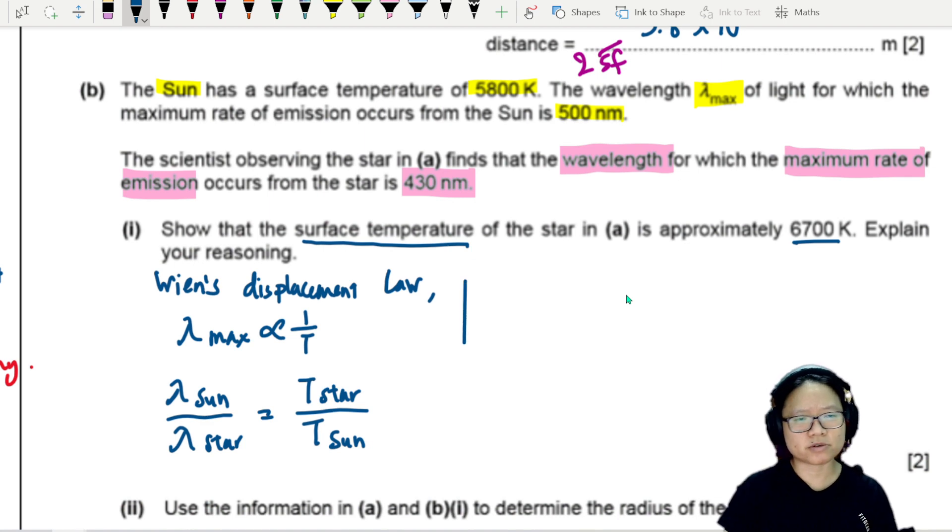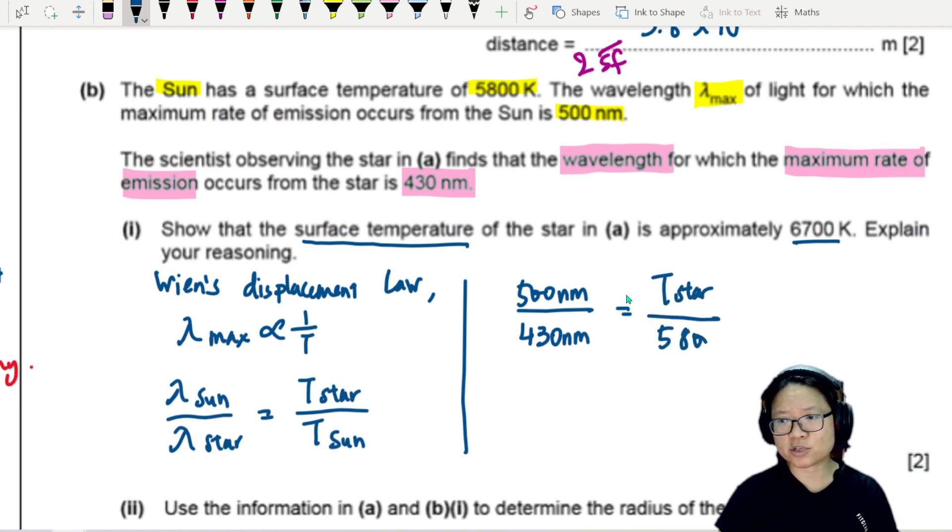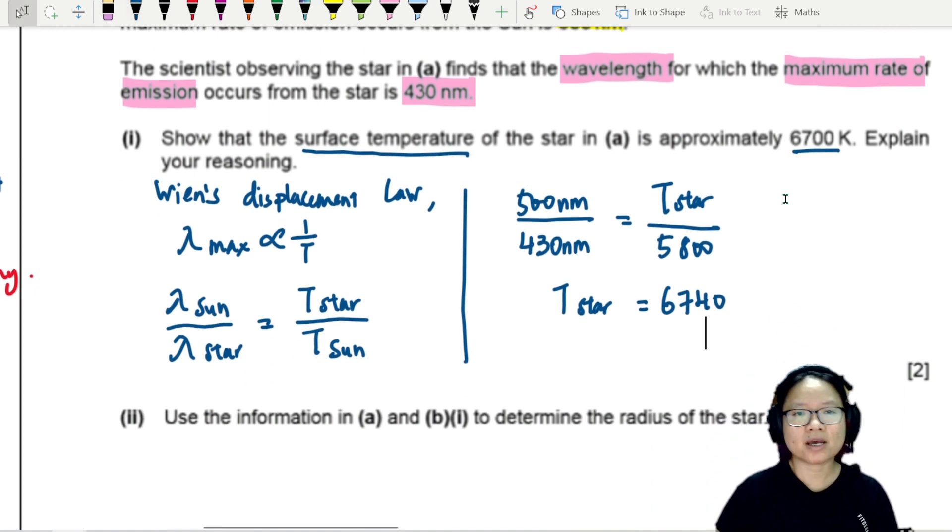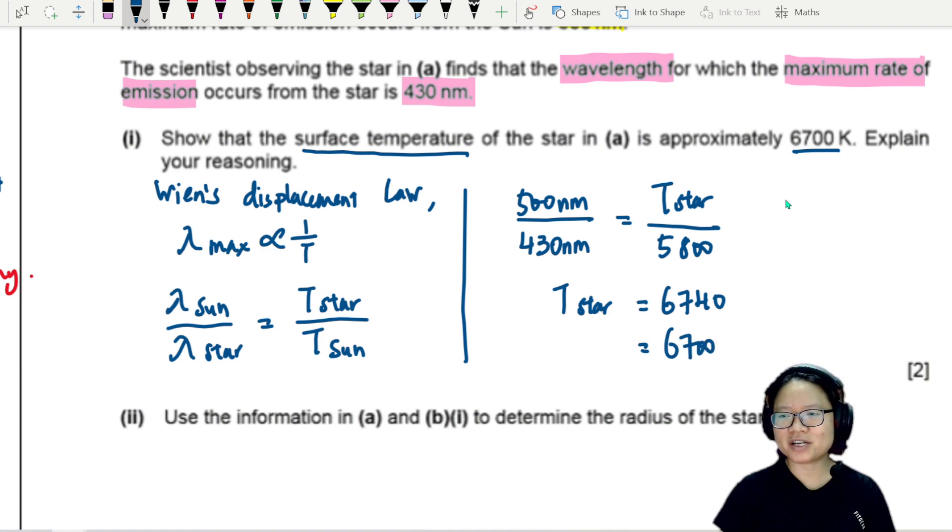The λ of sun we have, let's just draw a line here, 500 nanometers divided by 430 nanometers will equal the temperature of the star divided by 5800. By rearranging, I can find the temperature of the star: 6740. And of course, if we round this to 2SF, 6700 Kelvin, shown.